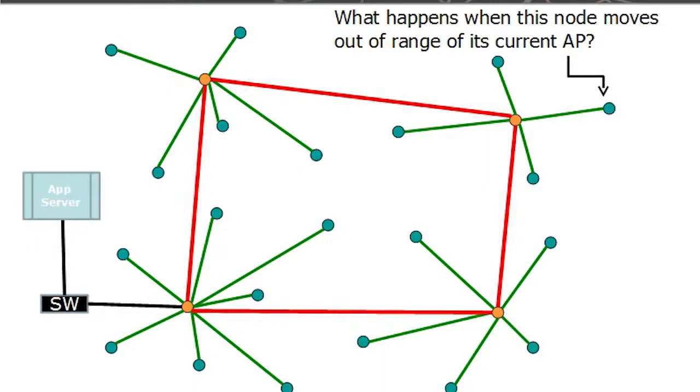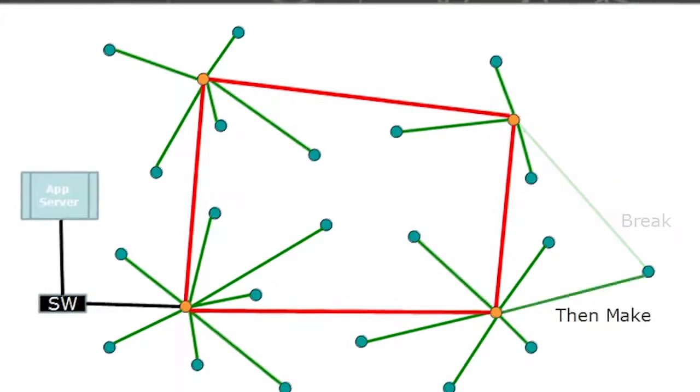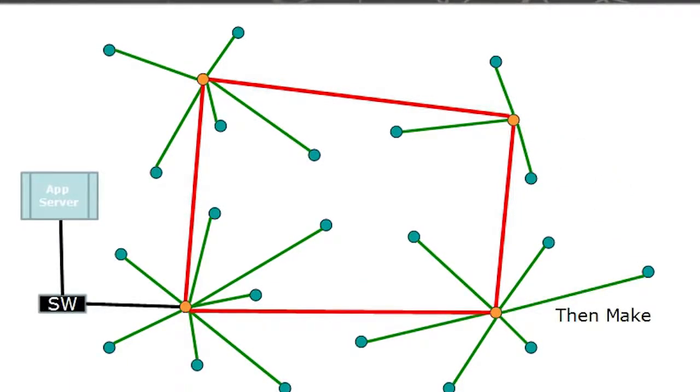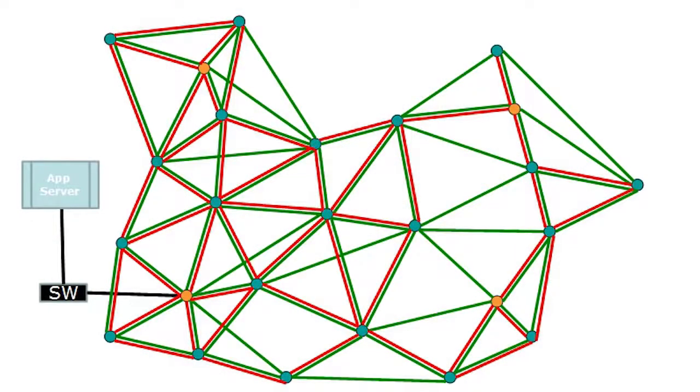In a traditional wireless network, what happens when this node moves out of range of its current access point? Well, first, it's going to lose connectivity. Then it has to try to connect with another access point, and if successful, then the network has to reconfigure a little bit, and so you end up with a temporary loss of communication. With a Rajant kinetic mesh, however, what happens if the same node moves?